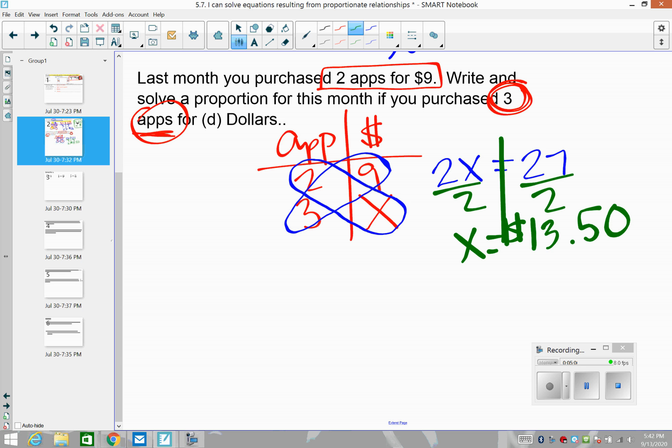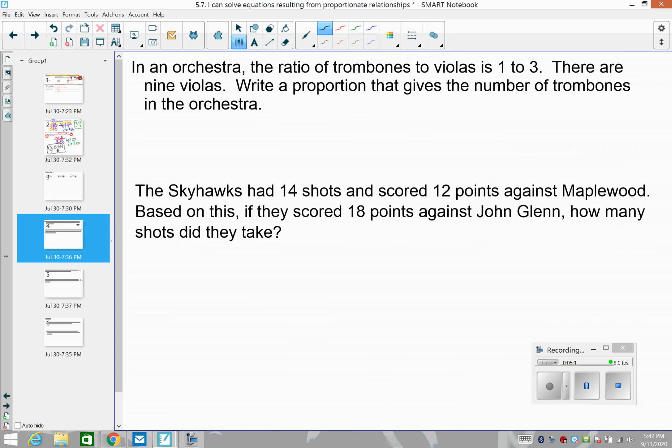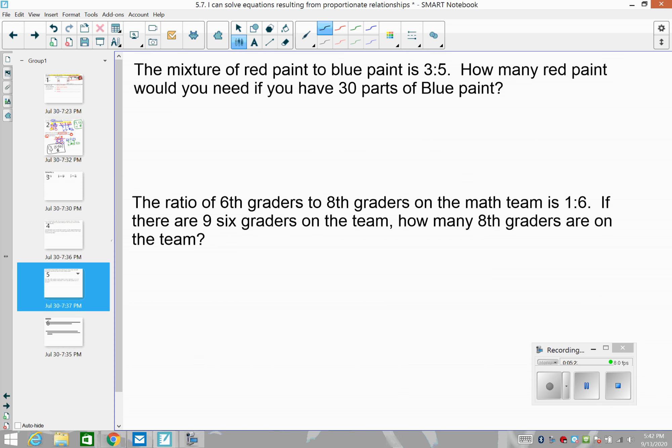Go ahead and pause the video if that's too fast. So we just came up with that three t-shirts cost $13 and 50 cents. There's our second proportion, cross products. All right, let's try another one. I'm going to come back to that one.